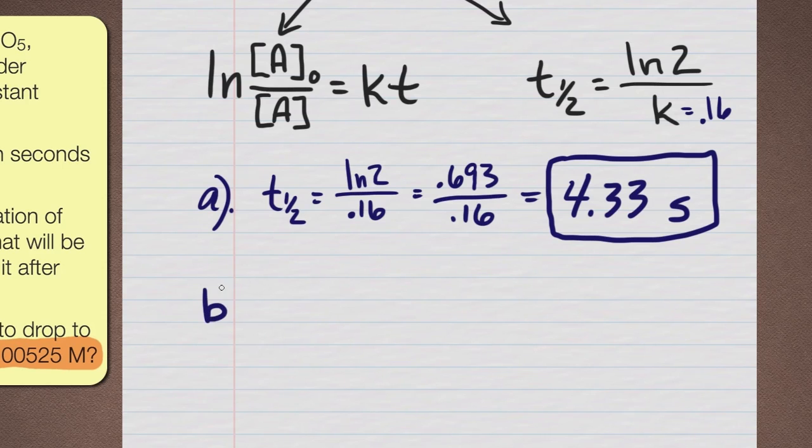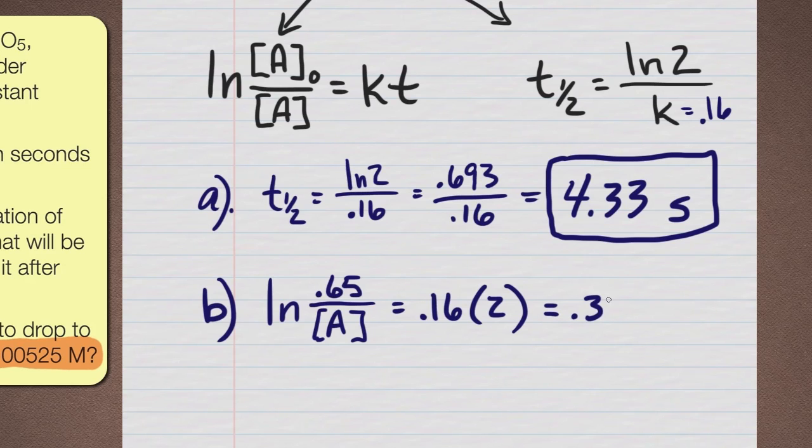Next part B. This time we're going to put the integrated rate law, and we're going to put in the actual initial concentration of 0.65. We're going to put that over the final concentration, which is what we're looking for. And that's going to equal 0.16 times the 2 seconds that was given. So to start out solving this, I'm going to immediately just go ahead and write what I know this is. I don't even need my calculator: 0.32.